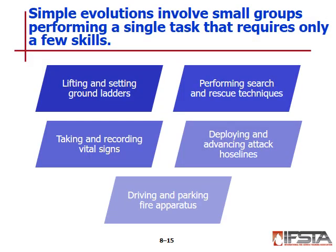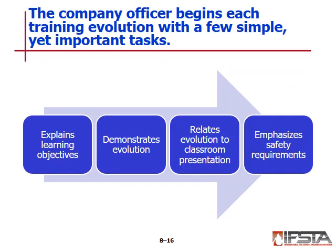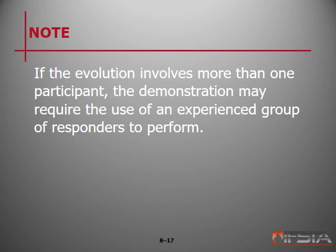Simple evolutions involve small groups performing single tasks requiring only a few skills. Examples include lifting and setting ground ladders, performing search and rescue techniques, taking and recording vital signs, driving and parking fire apparatus, or deploying and advancing attack hose lines. To begin, the company officer should explain the learning objectives, demonstrate the evolution, relate the evolution to the classroom presentation, and emphasize safety requirements.